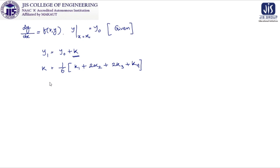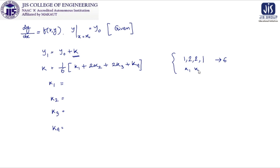The coefficients of K1, K2, K3, and K4 are 1, 2, 2, and 1 respectively, and if you add them you get 6. So K is the weighted average of K1, K2, K3, K4, multiplied by their respective weights and then divided by 6, giving us 1/6 × (K1 + 2K2 + 2K3 + K4).